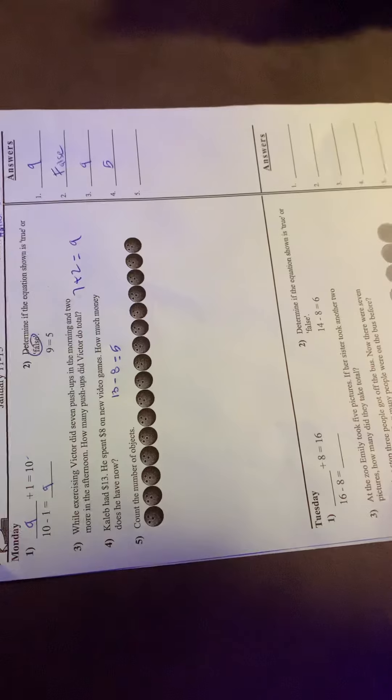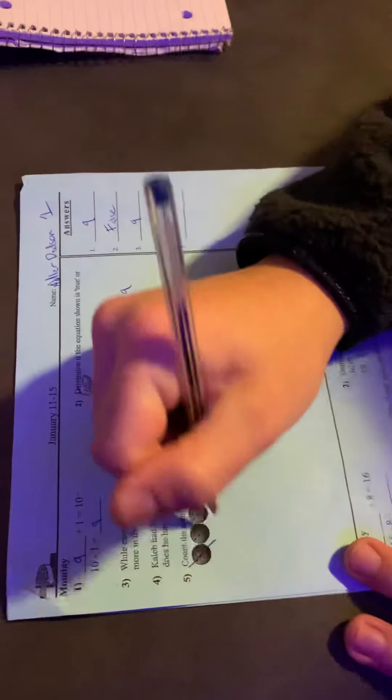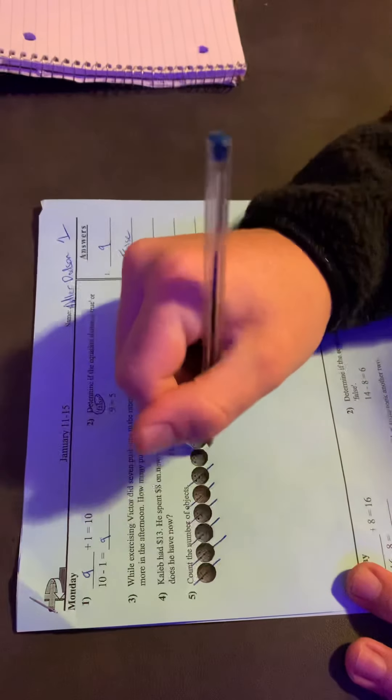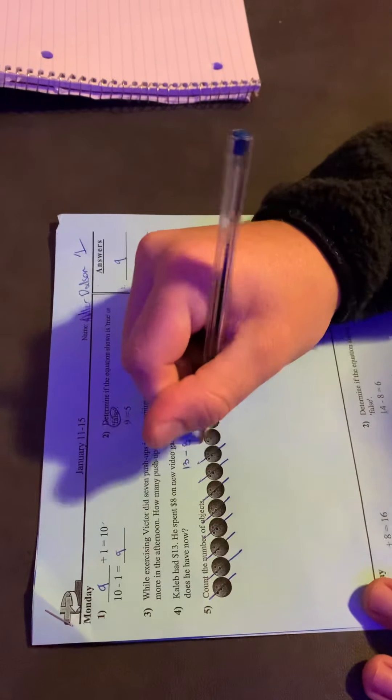Count the number of objects. I'm just counting these things. But I teach them to mark it out as you're counting so you don't lose track. That's what I do too. Perfect. One, two, three, four, five, six, seven, eight, nine, ten, eleven.